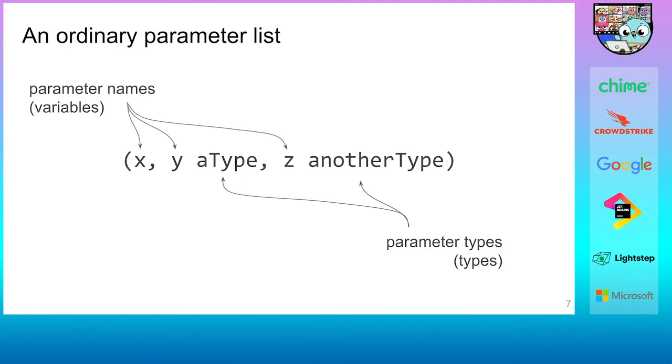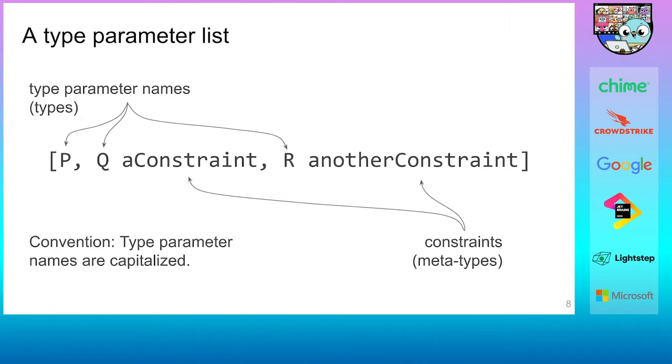So first, let's have a look at ordinary parameter lists. It is a list of parameter names representing variables inside a function with corresponding parameter types. The types specify what values are accepted as concrete arguments. This is all basic Go stuff. Now, a type parameter list looks exactly like an ordinary parameter list, except that it uses square brackets as delimiters. At least syntactically, there's no learning curve here.